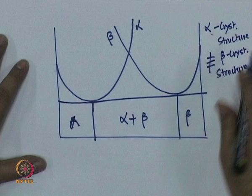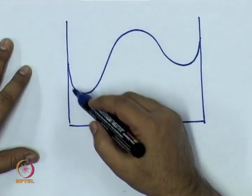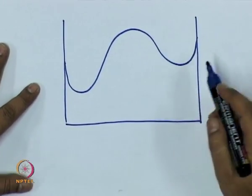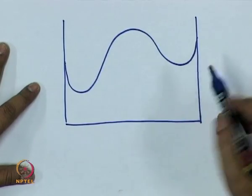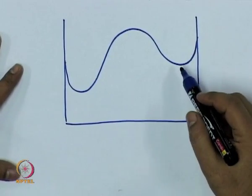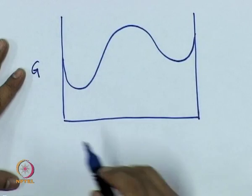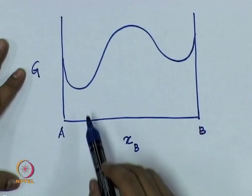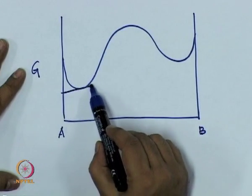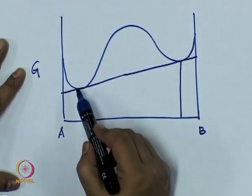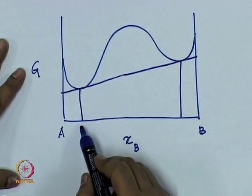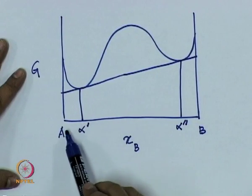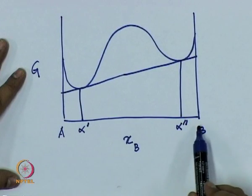However, the kind of curve I have drawn, which assumes a continuous variation, means the two phases have basically the same crystal structure. Sometimes they are noted as alpha prime and alpha double prime to indicate it is the same crystal structure. The only difference is the composition — remember, this is free energy versus composition. This is pure A and this is pure B. So when you draw a common tangent, you get the two phases: alpha prime, which is rich in A because it is closer to the A point, and alpha double prime, which is richer in B.